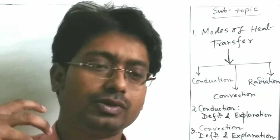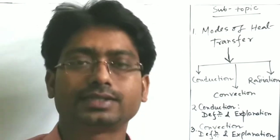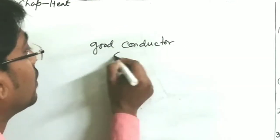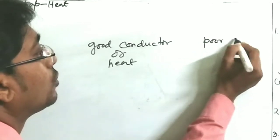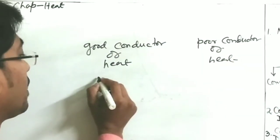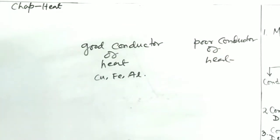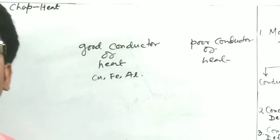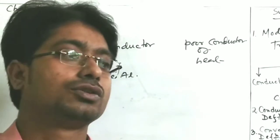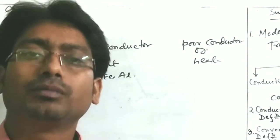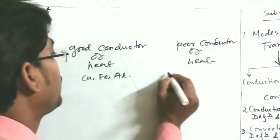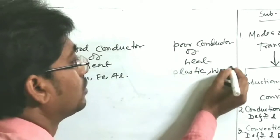First, we can divide substances into two categories with respect to heat. Some substances are called good conductors of heat and some are called poor conductors of heat. Good conductors are most metals like copper, iron, aluminium, etc. Substances which allow heat to pass through them easily are good conductors, and those which do not are poor conductors — sometimes called insulators. Examples of poor conductors are plastic and wood.